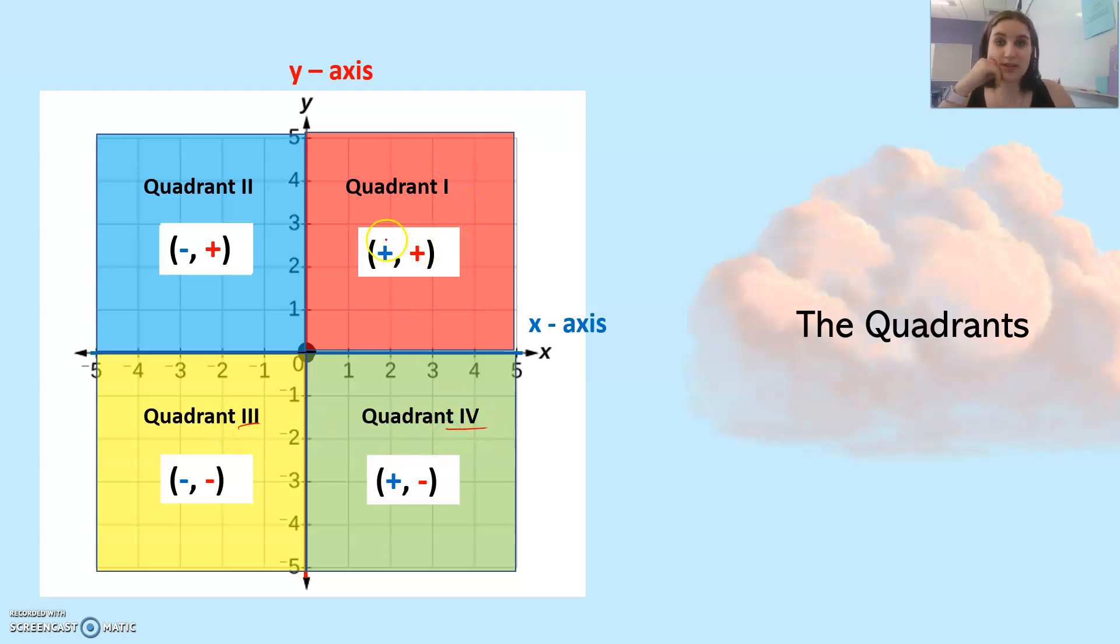Quadrant 1, the x value and the y value are positive. In quadrant 2, the x value is negative and the y value is positive. In quadrant 3, both x and y are negative, and in quadrant 4, the x value is positive and the y value is negative.